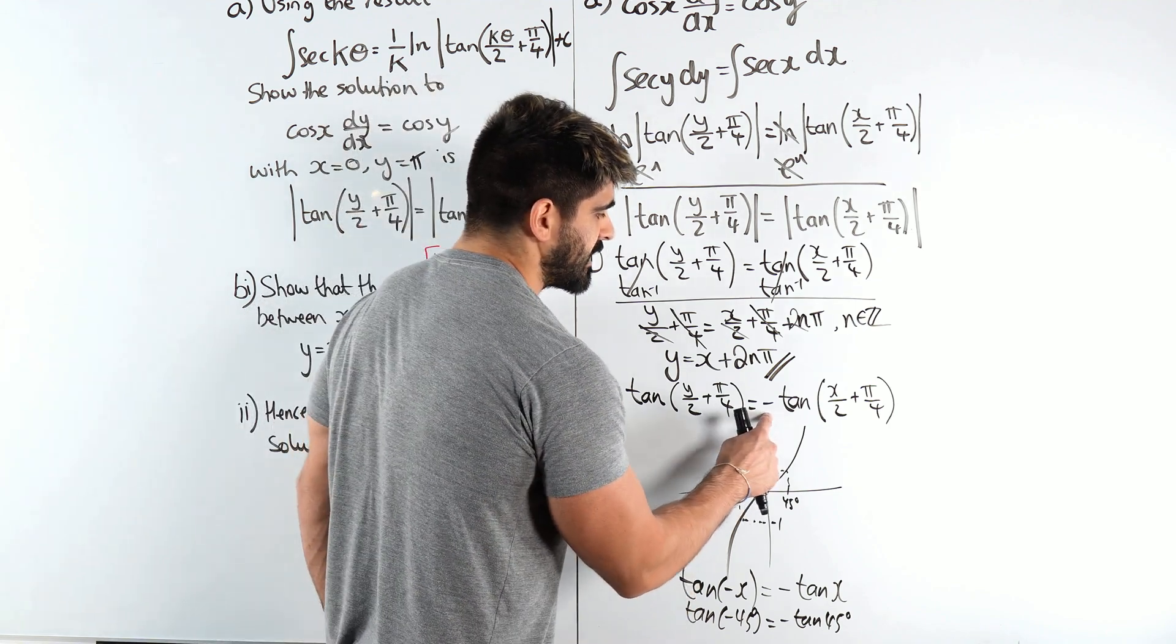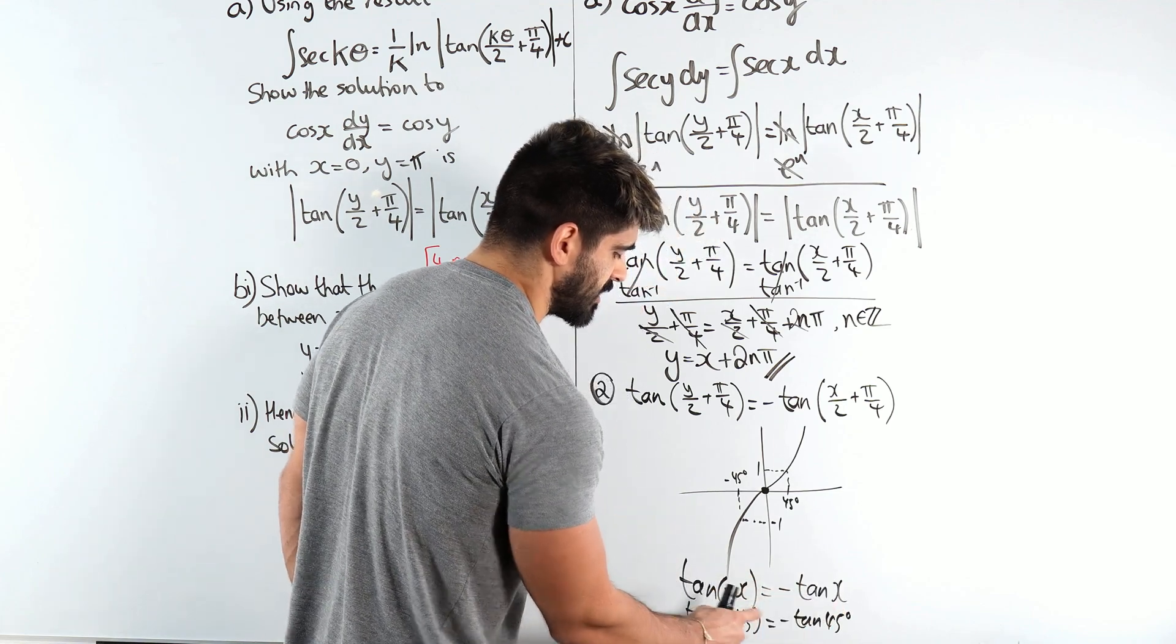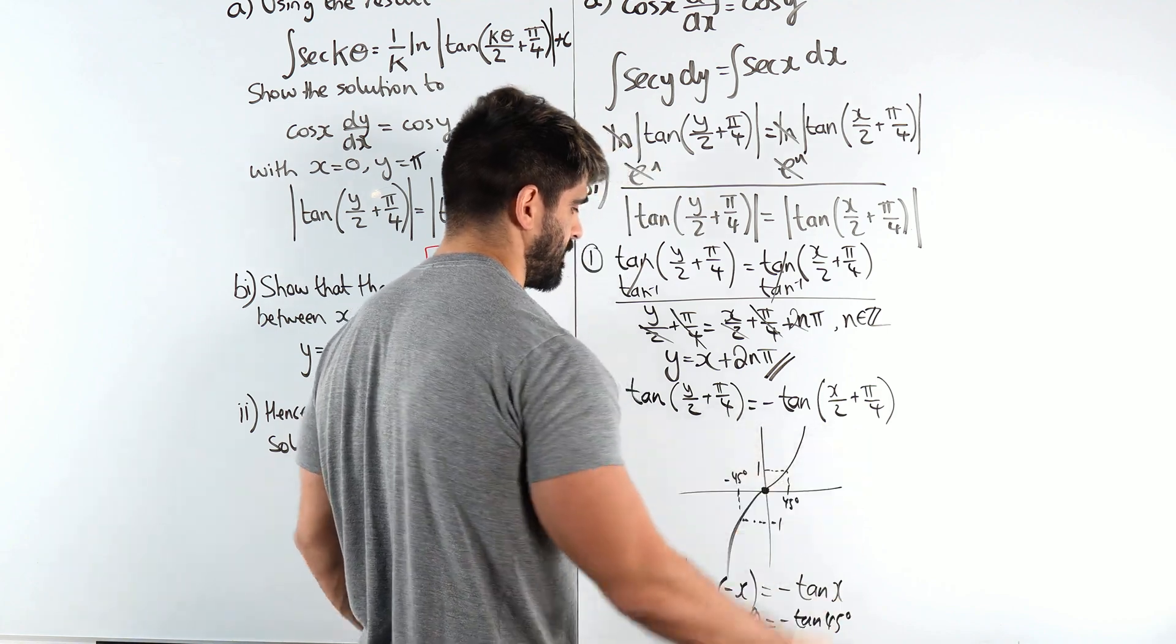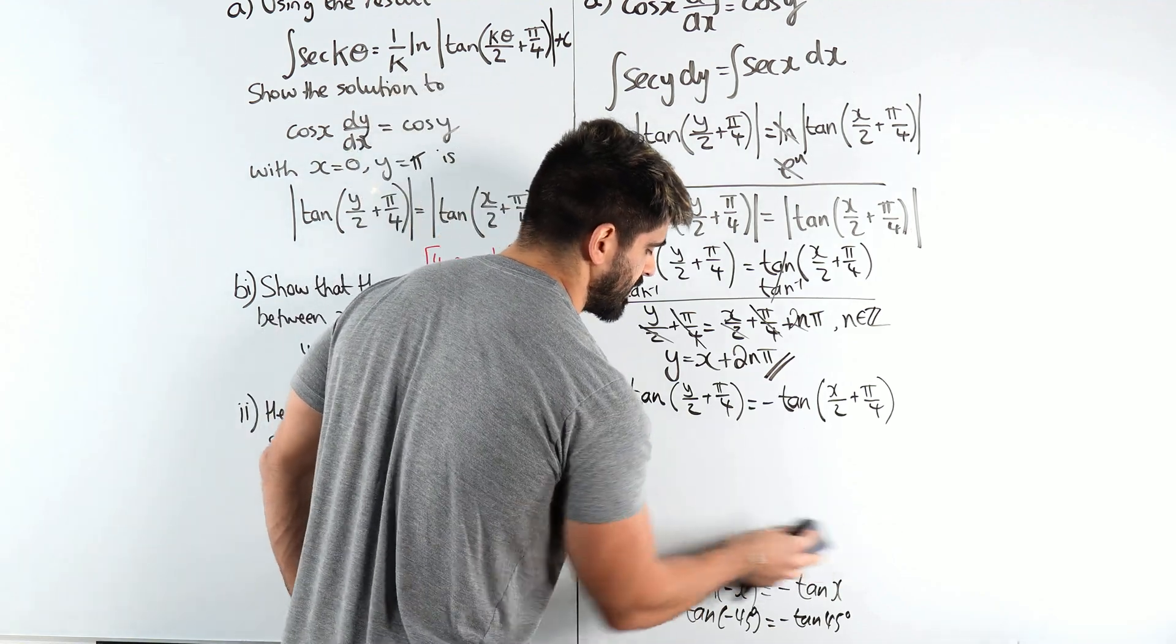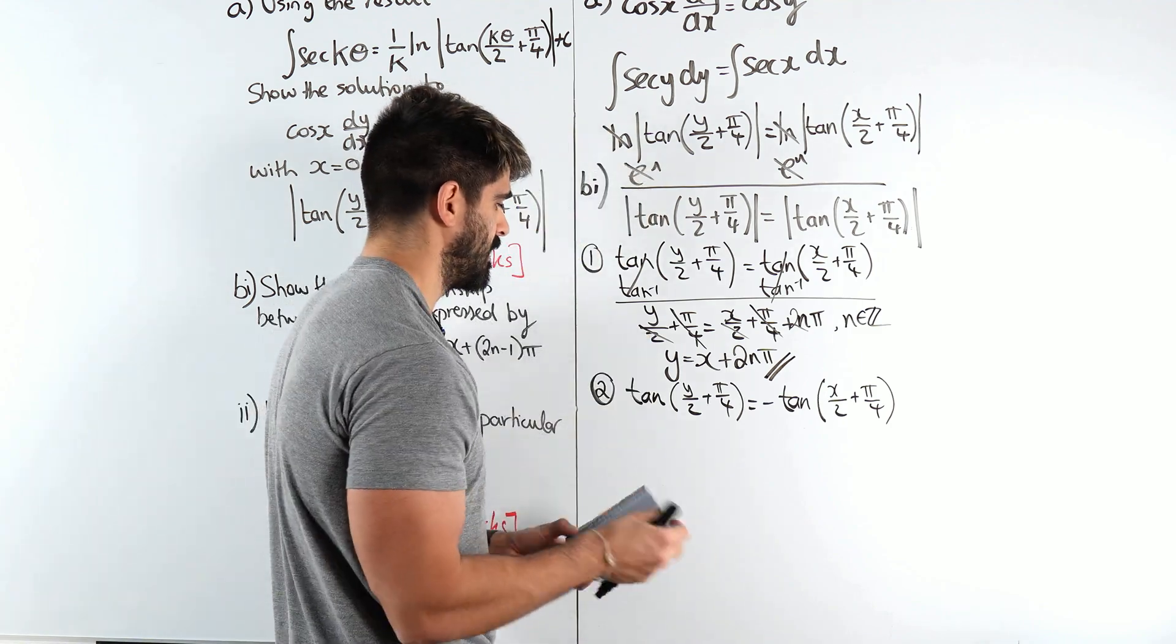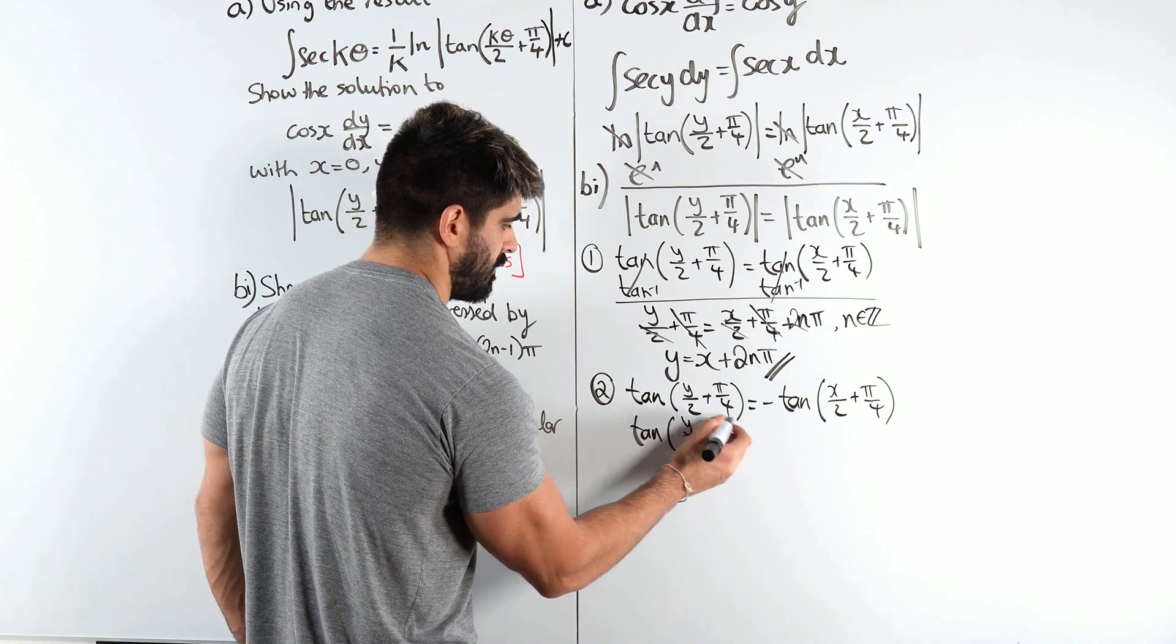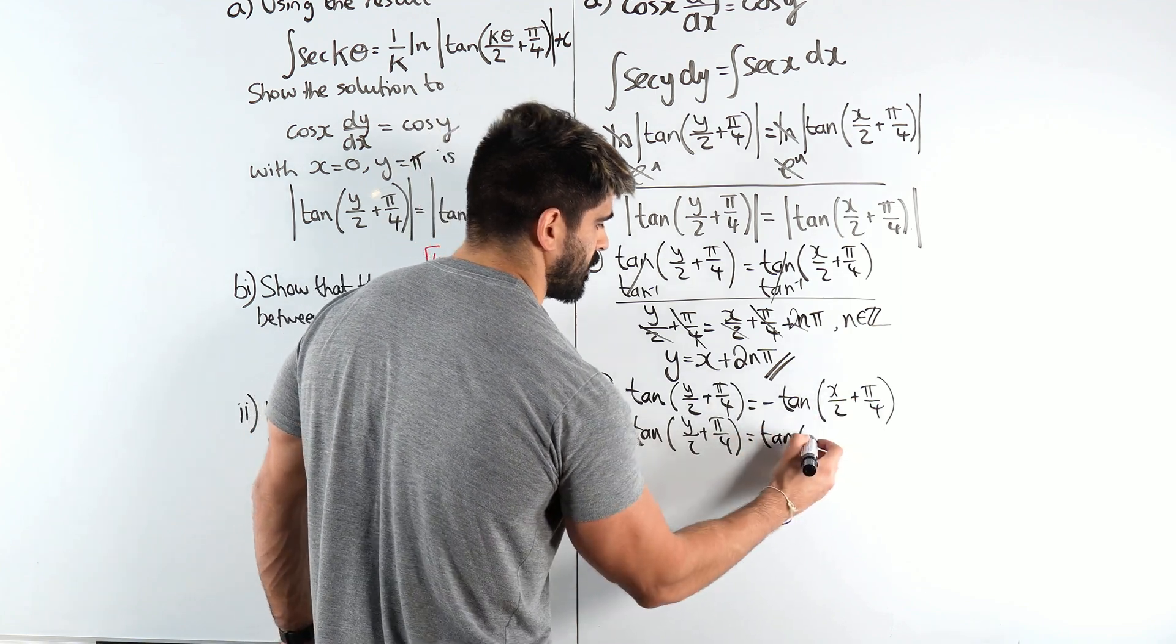So, the negative tan of this angle is just the same as tan of, just negate the angle. So that minus just goes inside. So it's an odd function. And now we can just do the same thing we did in the example above. So we have tan of y over 2 plus pi over 4 is tan of the negative of all this, minus x over 2 minus pi over 4.